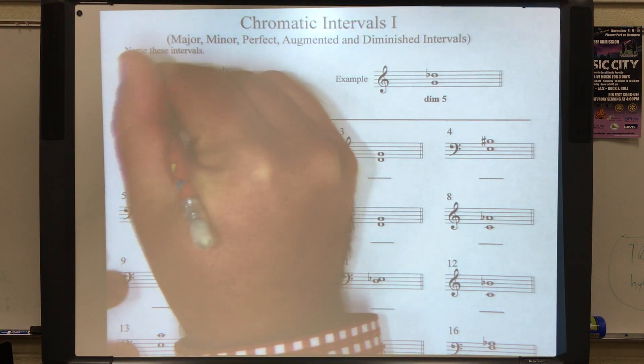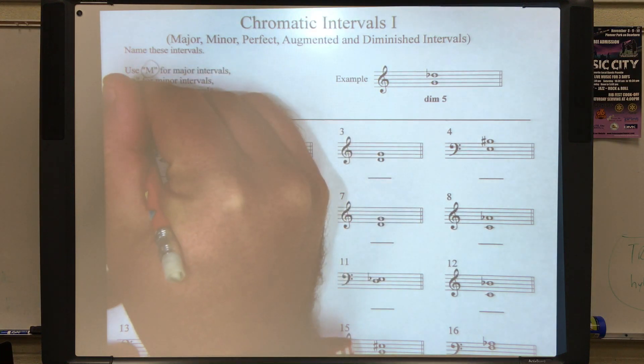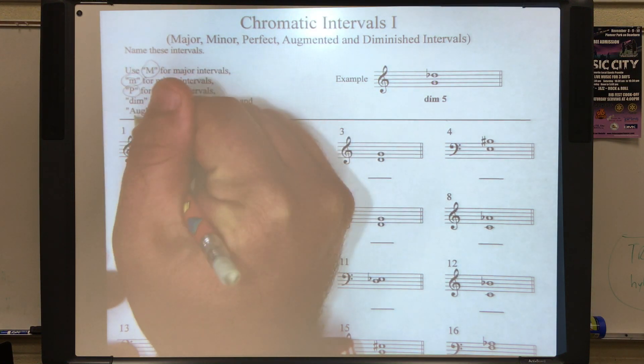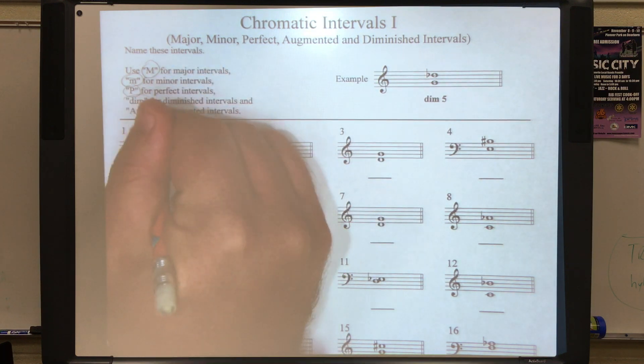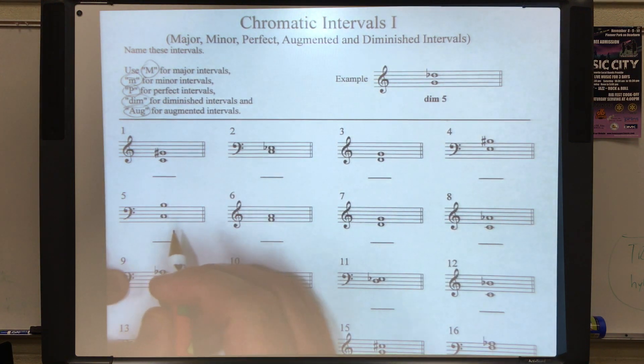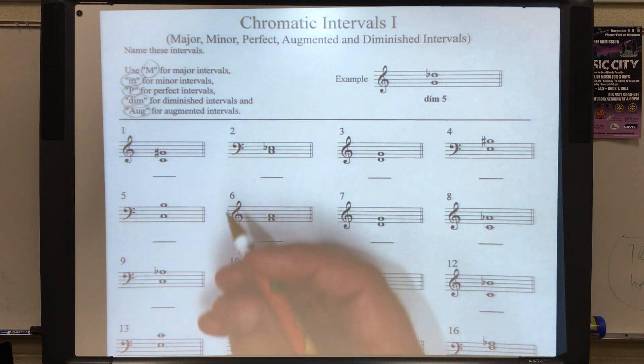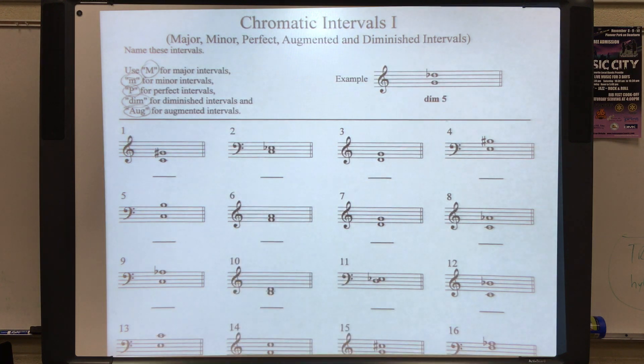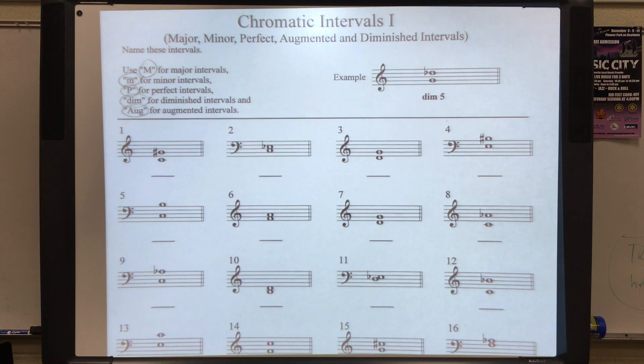Just to review, we're going to use a big M for major, little m with a line over it for minor, big P for perfect, dim for diminished, and capital AUG for augmented. You should have a chart to refer to as far as all the half steps for all these intervals go. Please use that as I've given it to you.